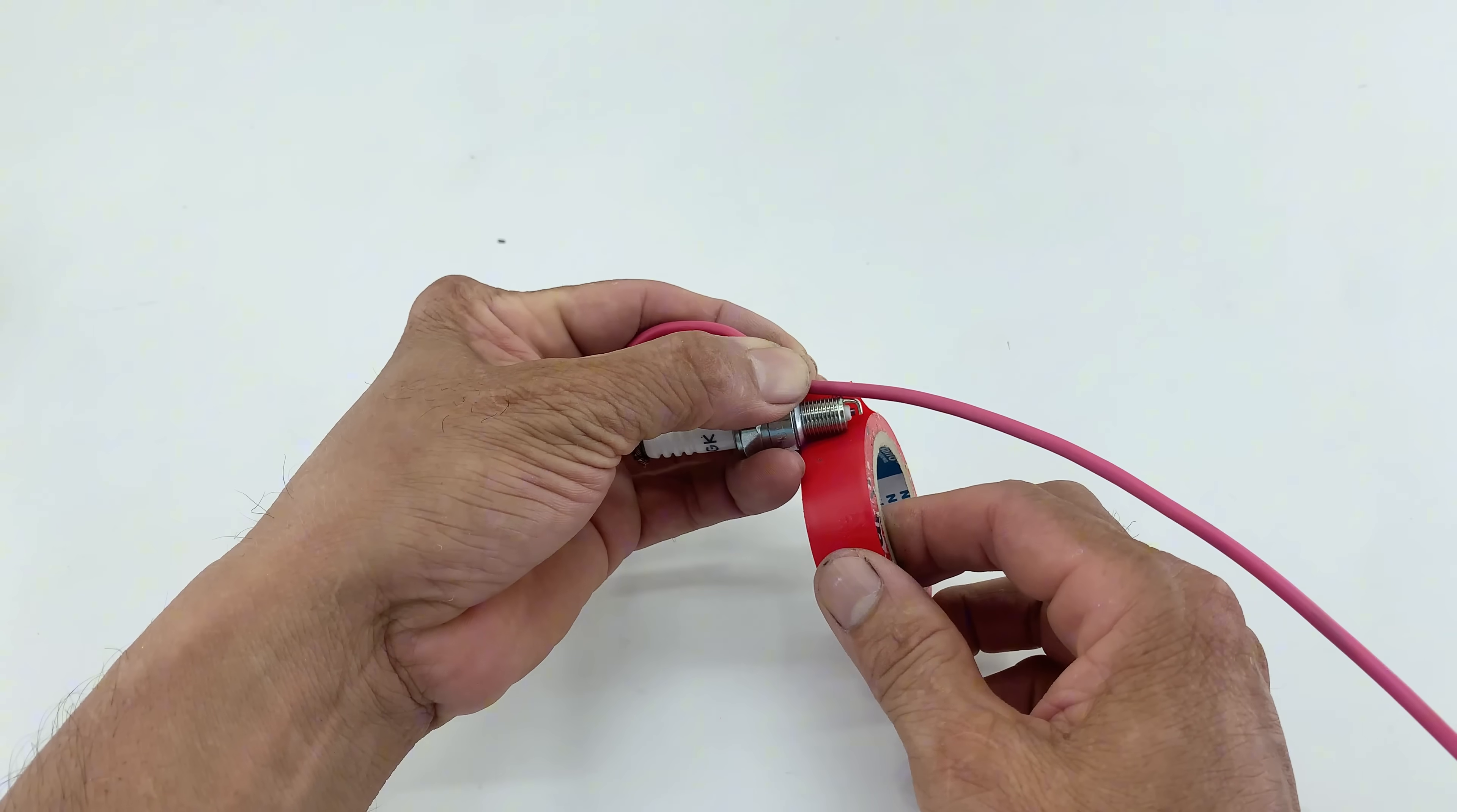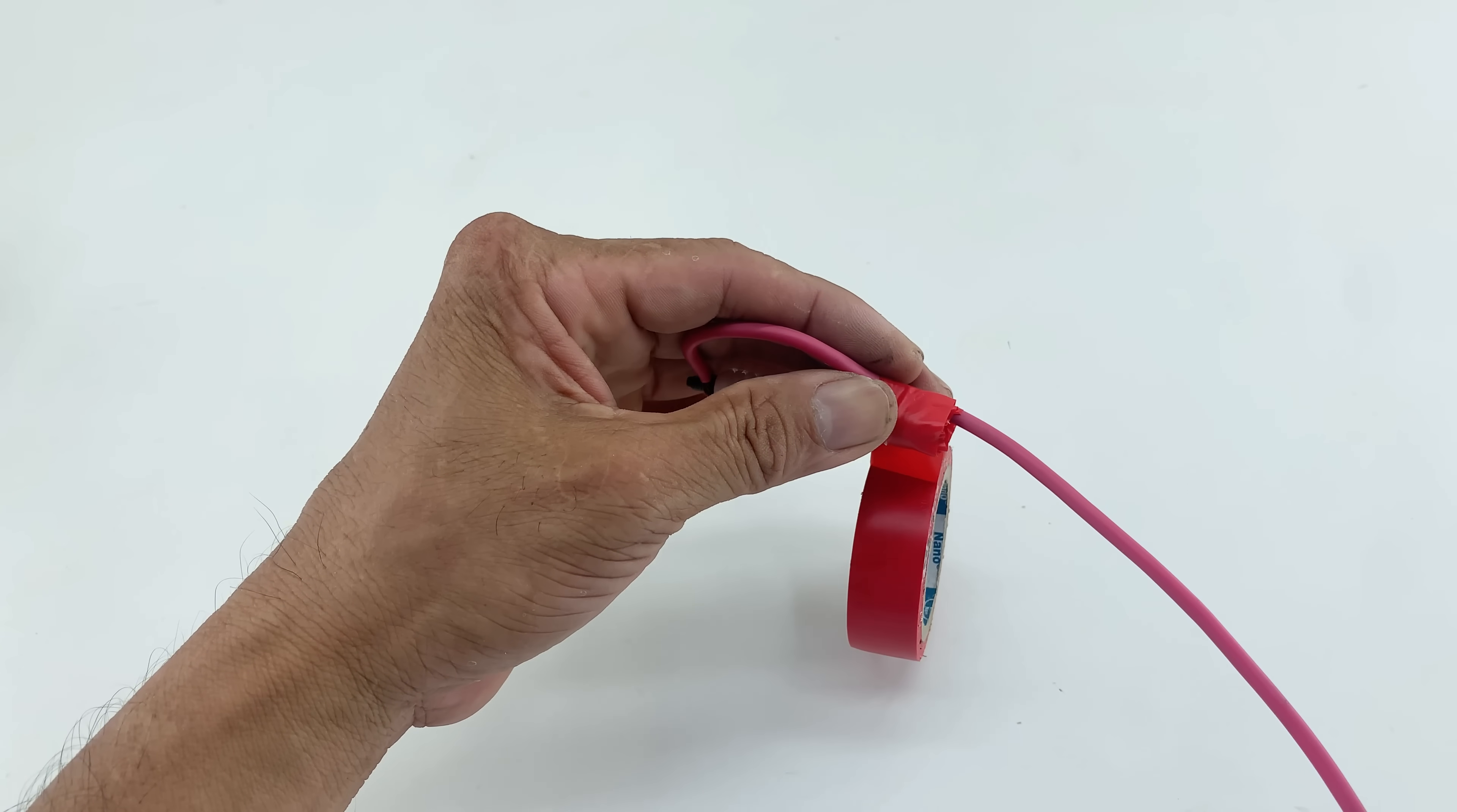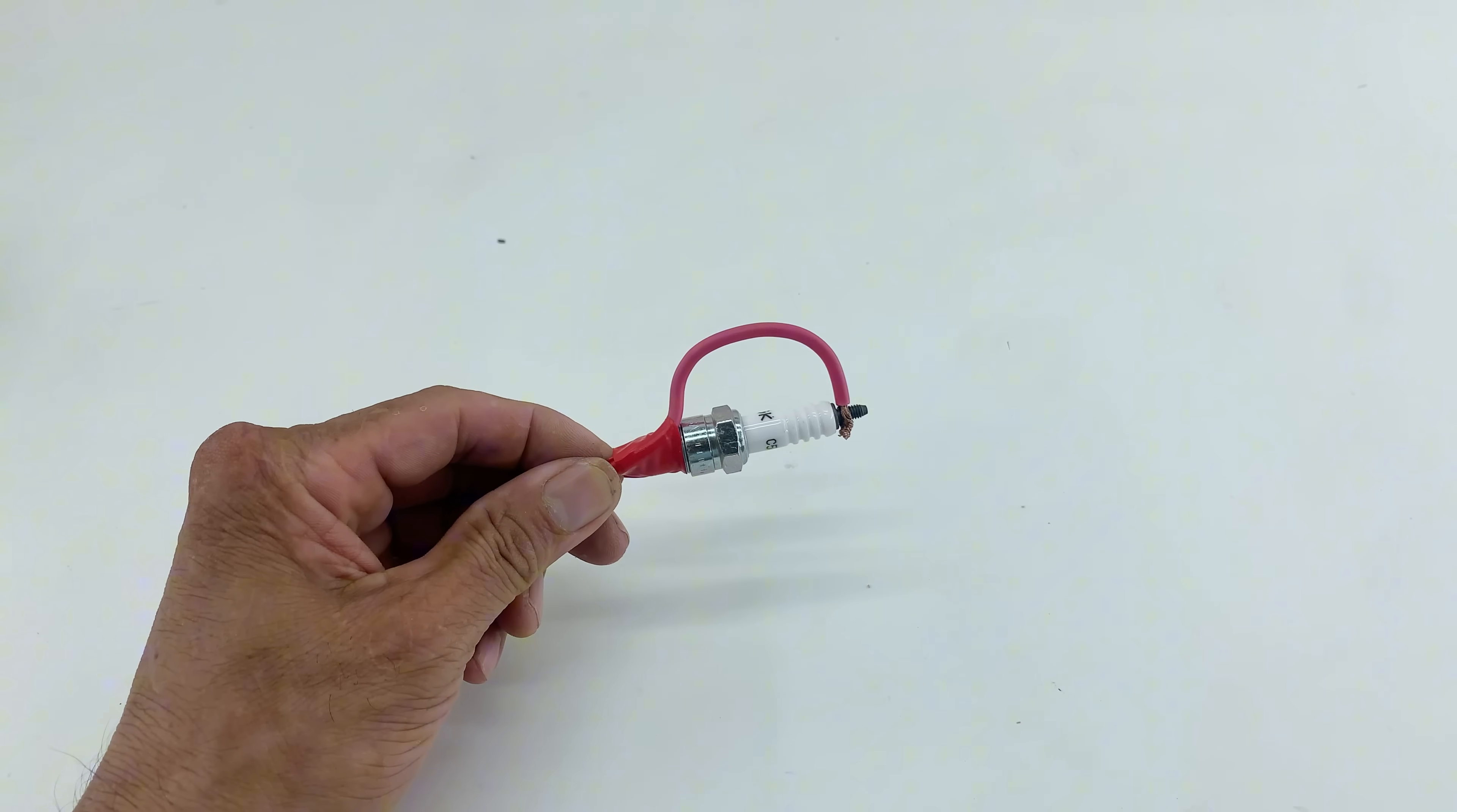To prevent short circuits and ensure user safety, I meticulously insulate the connection point on the spark plug using red electrical tape. The wrapping technique ensures complete coverage and adherence, reinforcing the assembly. I cut the tape precisely to maintain a neat and functional profile. This insulation is a critical safety measure, preventing accidental contact with live electrical components during operation.